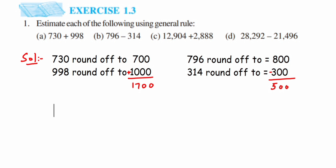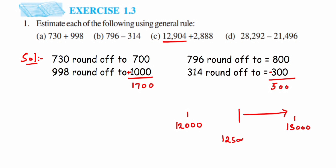Next we have 12904. Here we're going to round off to the thousands place since it's a five-digit number around 12000. 12904 lies between 12000 and 13000. The center is 12500, and 12904 is greater than 12500, so it lies closer to 13000. When you round up that number, it becomes 13000.